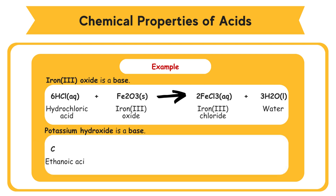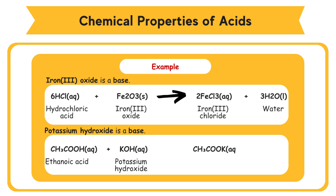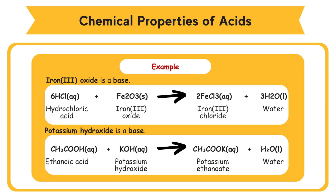Ethanoic Acid, CH3COOH, reacts with Potassium Hydroxide, KOH, to become Potassium Ethanoate, CH3COOK, and water, H2O.